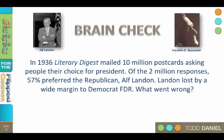Here is another famous illustration of sampling error. In 1936, the magazine Literary Digest, which had a long track record of picking presidential winners, mailed 10 million postcards asking people their choice for president. Of the two million responses, 57% preferred the Republican, Alf Landon. However, Landon lost by a wide margin to Democrat Franklin D. Roosevelt. The answer this time is sampling error by asking too many of the same people.